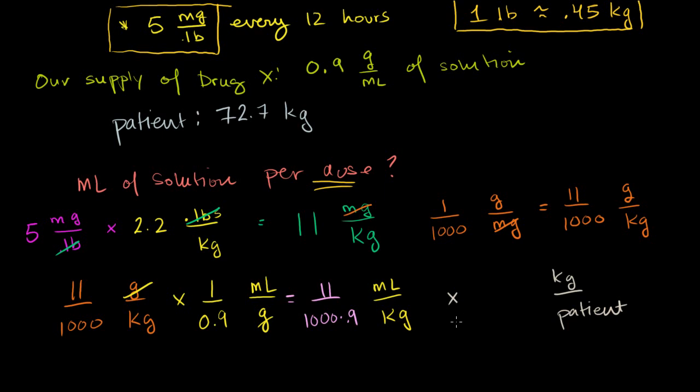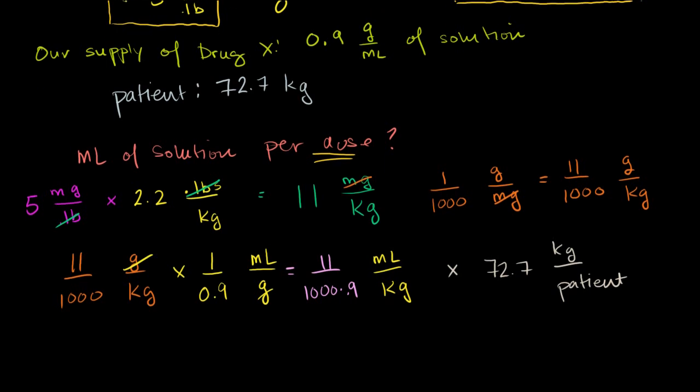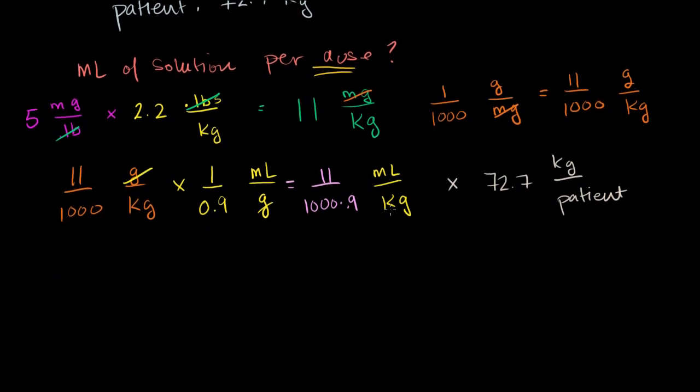We want milliliters of solution per dose per patient. But everything we've assumed so far has been per dose. So how many kilograms does a patient weigh? Well, there's 72.7 kilograms per patient. That's how much the patient weighs. So we just do this final multiplication and we'll be done. So our answer, and these two things are going to cancel out. So our final answer is going to be 11 times 72.7 divided by 100 times, actually 100 times 0.9 is pretty easy to figure out, that's 900. Divided by 900 milliliters per patient. Or you could just say milliliters per dose.